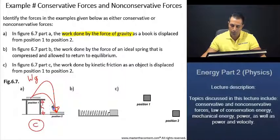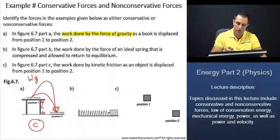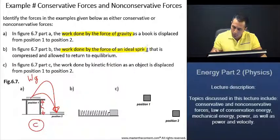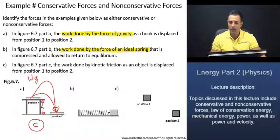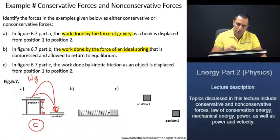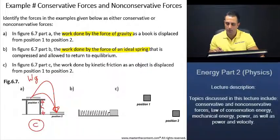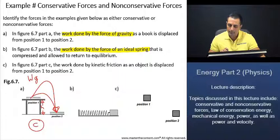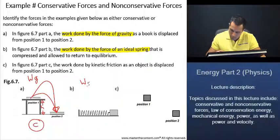Now, if we move to Part B, it's saying to us in Figure 6.7 Part B, the work done by the force of an ideal spring that is compressed and allowed to return to equilibrium. Now we're talking about the work done by the force of an ideal spring. And if we recall, an ideal spring is one that is massless, frictionless, and obeys Hooke's Law. Work done by an ideal spring.